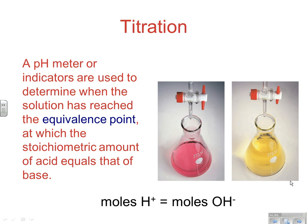A pH meter or indicators are used to determine when the solution has reached the equivalence point. The equivalence point is the point at which the stoichiometric amount of acid, contributing H+, equals the stoichiometric amount of OH-. At this point, H+ concentration equals OH- concentration. This is also known as the stoichiometric point — equivalence point and stoichiometric point refer to the same thing.